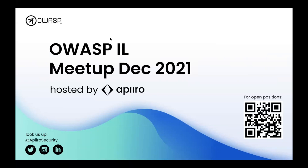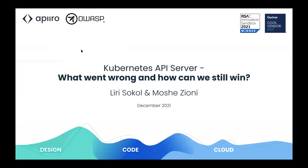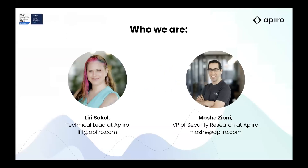Today we're going to discuss the Kubernetes API server, which is a very specific but very large component within the Kubernetes ecosystem. Before we get into our high-level goals, I'd like to introduce Lily Stopo, our greatest and brightest engineer within the company — the tech lead at Apiro, in charge of 99% of the code across around 40 engineers. I'm the VP of Security Research at Apiro.